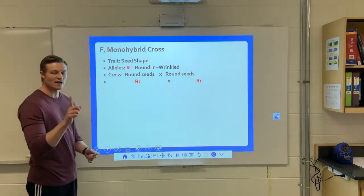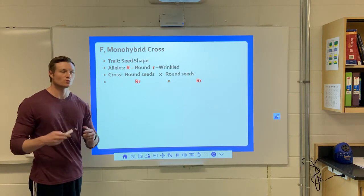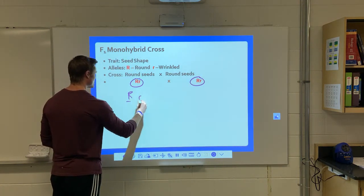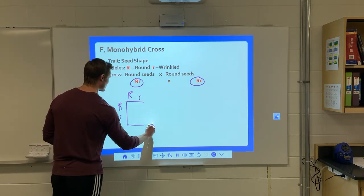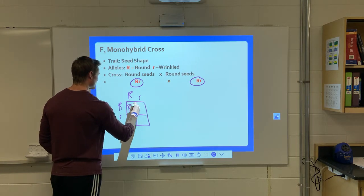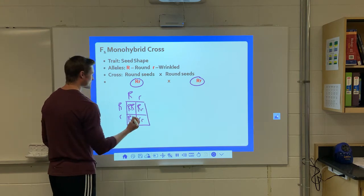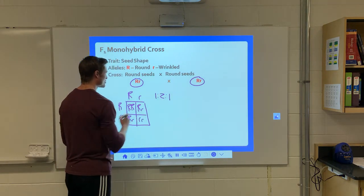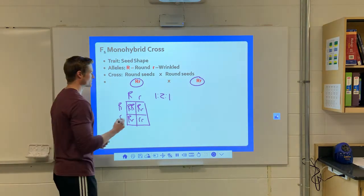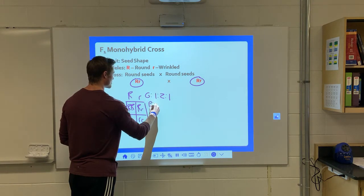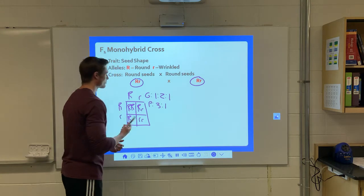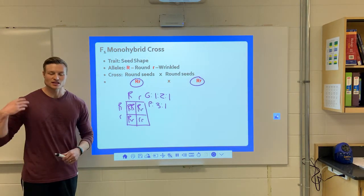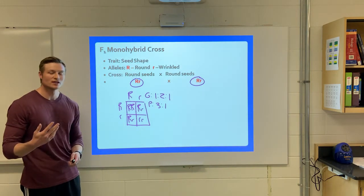Now let's do an F1 cross — we cross the individuals we just produced. We take a hybrid and cross it with a hybrid. We make our Punnett square and carefully match up the alleles. This gives us a new ratio: for genotype, one homozygous dominant, two heterozygous, and one homozygous recessive — a 1:2:1 ratio. Our phenotype ratio would be 3:1, because we have three dominant and one recessive. That's how you do a monohybrid cross.